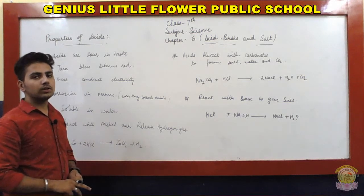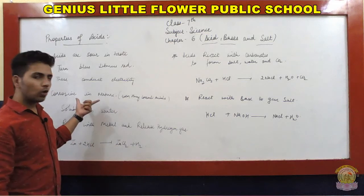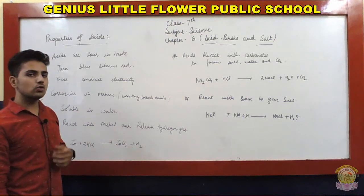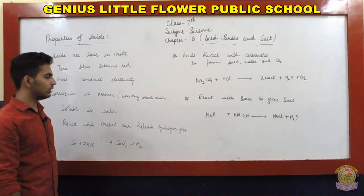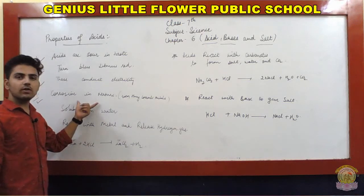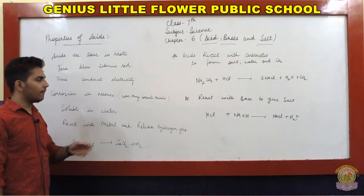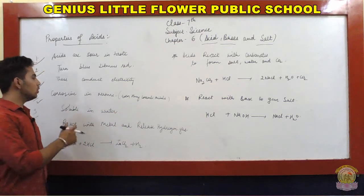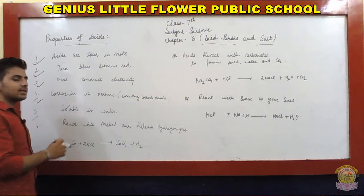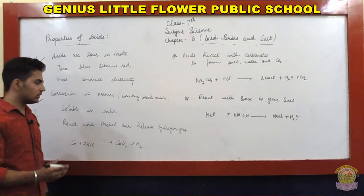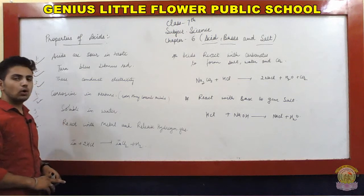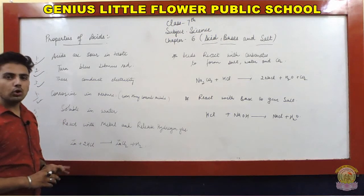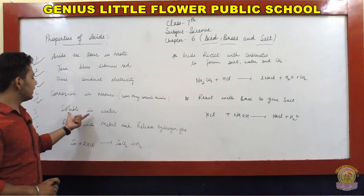The fourth property is acids are corrosive in nature. Weak acids are less corrosive, while strong acids are highly corrosive - even capable of burning paper and corroding metals.